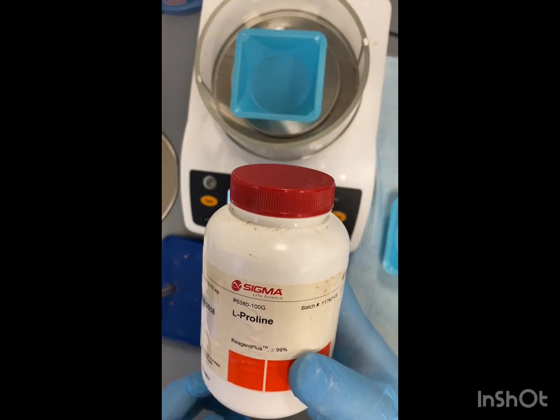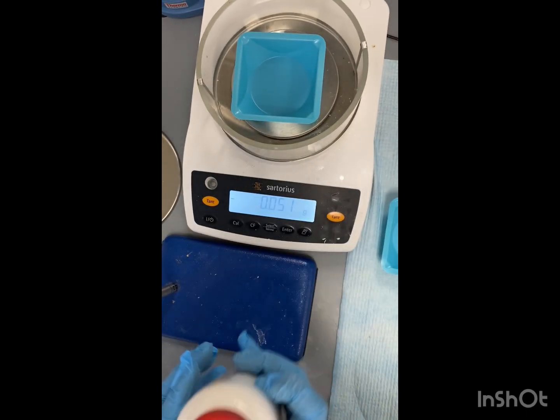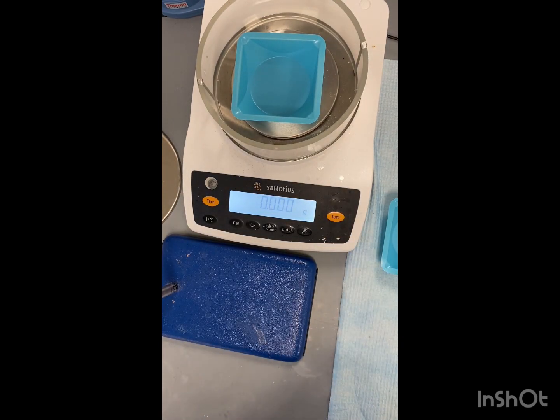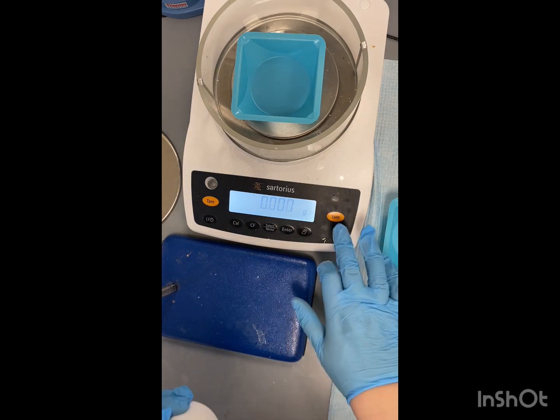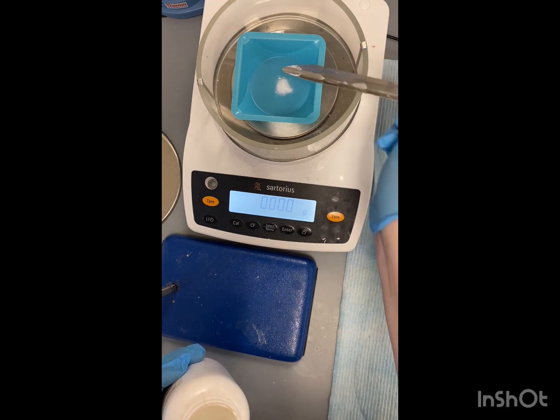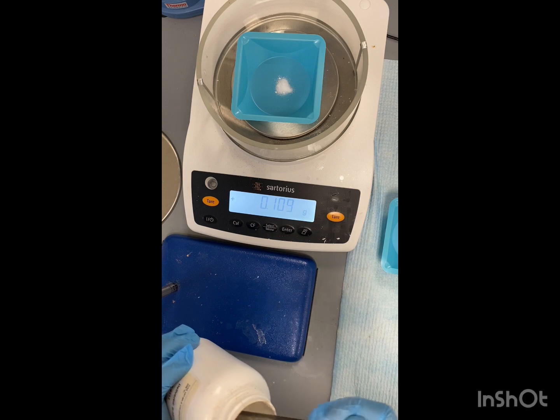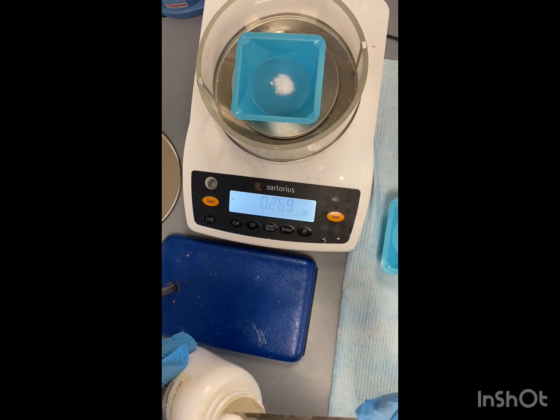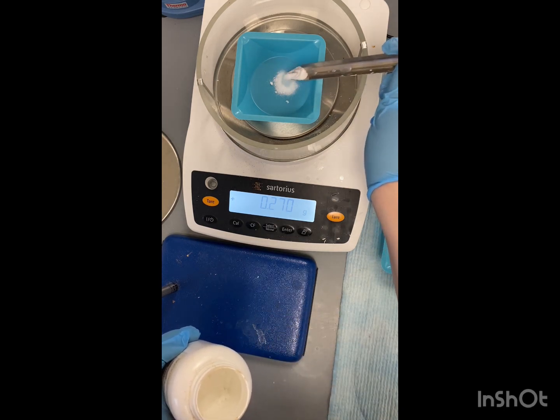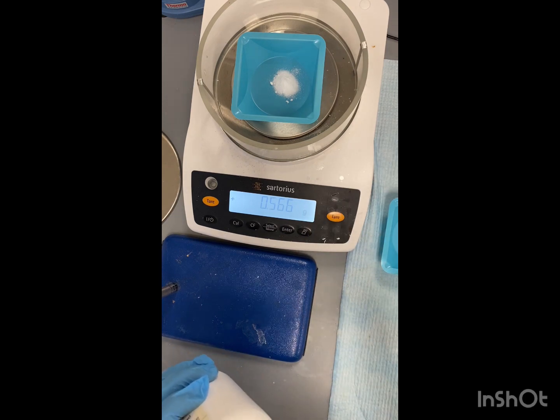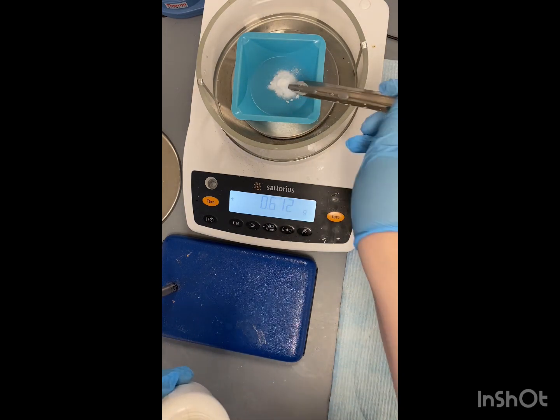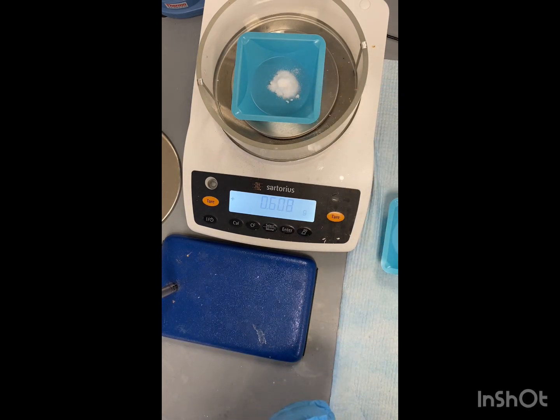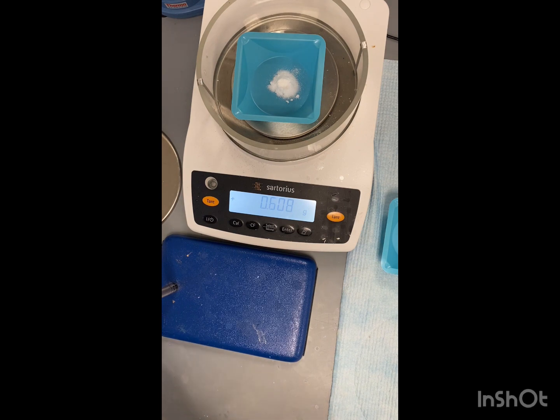Next we're going to add around 600 milligrams or 0.6 grams of our L-proline. Alright, so our final mass on that is 0.608 grams of, again, of our L-proline.